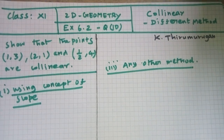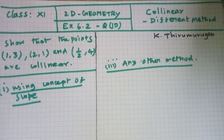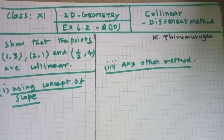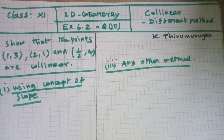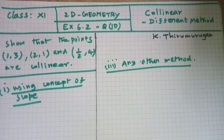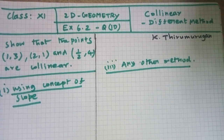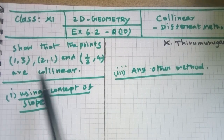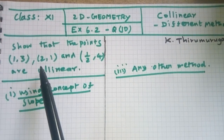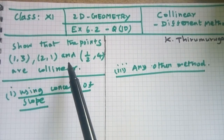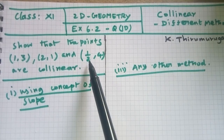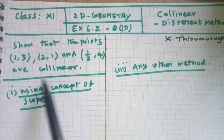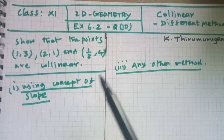Hey everyone, in this video section we are going to discuss collinearity using different methods. Show that the points (1,3), (2,1), and (1/2, 4) are collinear.